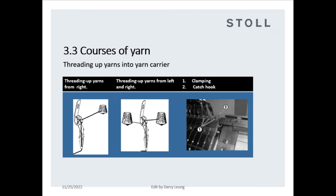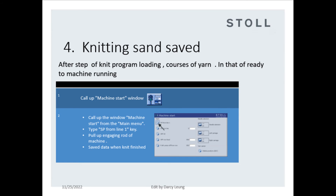Topic 4: Knitting and saved. After steps of knit program loading, courses of yarn, and checking all setup data — when everything is right, the machine is ready to run. Call up machine start window: Step 1, call up the machine start window from the main menu. Step 2, type SP from line. Step 3, pull up engaging rod of machine. Step 4, save data when knitting is finished.